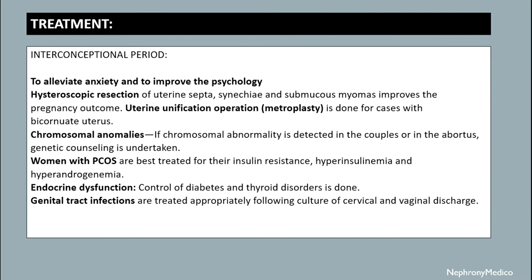Treatment during the inter-conceptional period should aim to alleviate anxiety and improve the psychological wellbeing of the mother. Specific treatment includes hysteroscopic resection of uterine septa. Submucosal fibroids may be removed. Uterine unification operation can be done for cases with bicornuate uterus and congenital abnormalities.